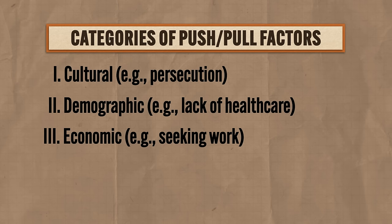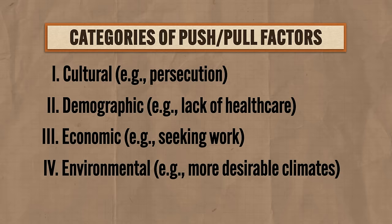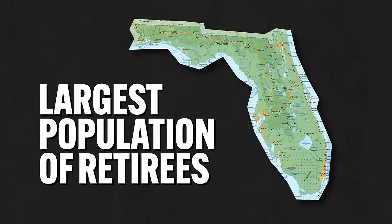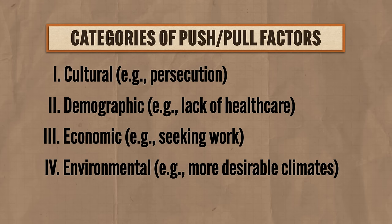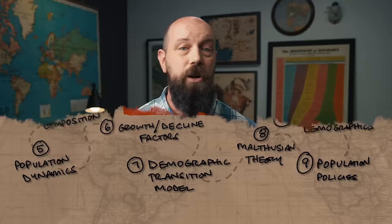In the environmental category, people may migrate because another region's climate is more desirable — for example, Florida is home to the largest population of retirees in America, many of whom migrated to avoid cold northern winters. In the political category, war is a major push factor — the Syrian Civil War, which began in 2011, has been responsible for the immigration of more than 5 million Syrians from their homeland.